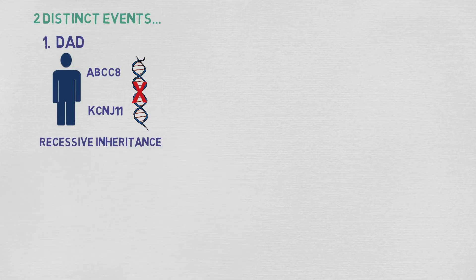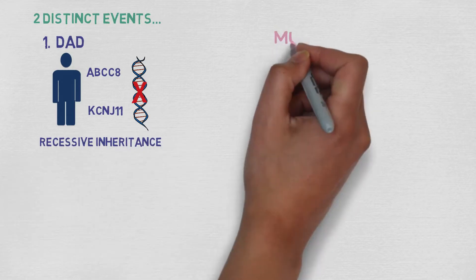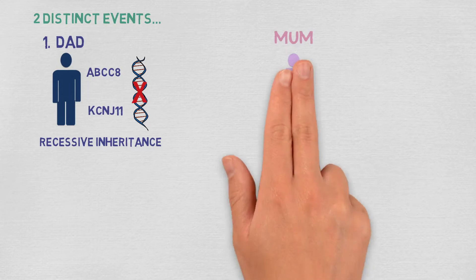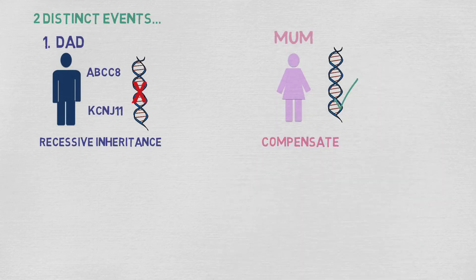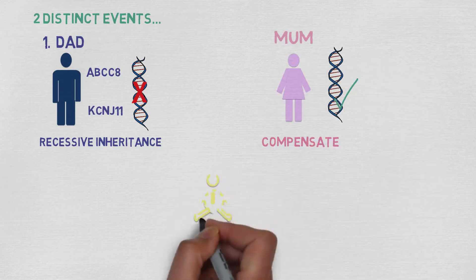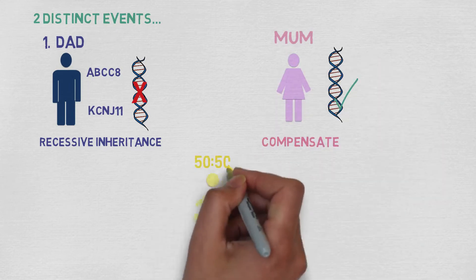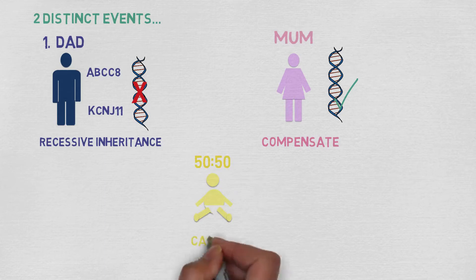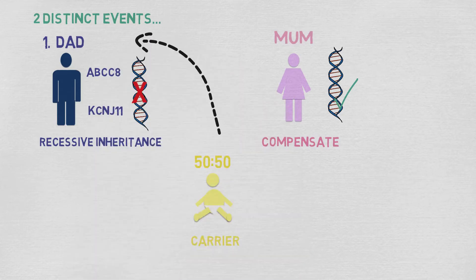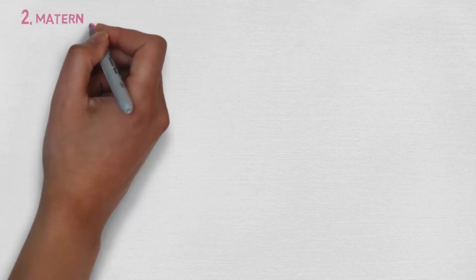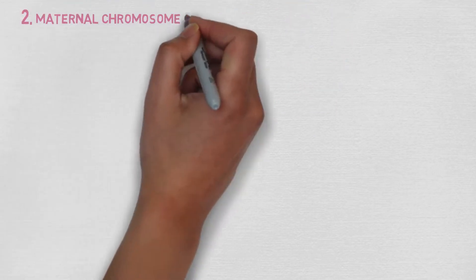So as we know from the last video, if mum had normal copies of the gene, she would be able to compensate for this and the child would have a 50-50 chance of being a carrier of CHI like his or her father. But in focal CHI, a second event occurs involving the maternal chromosomes.